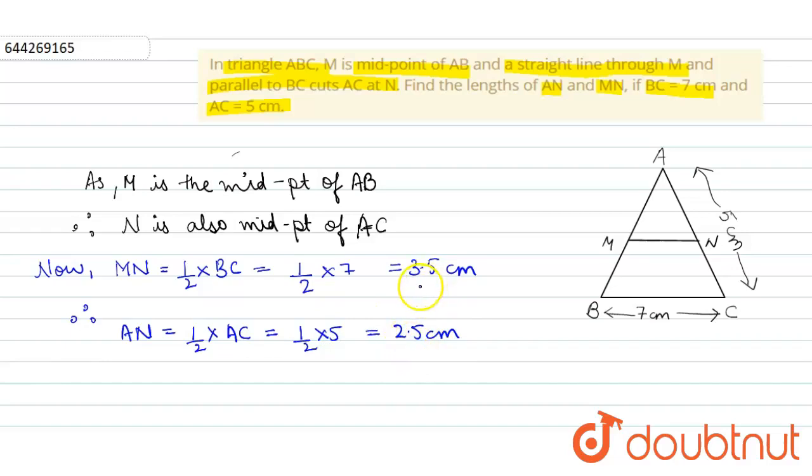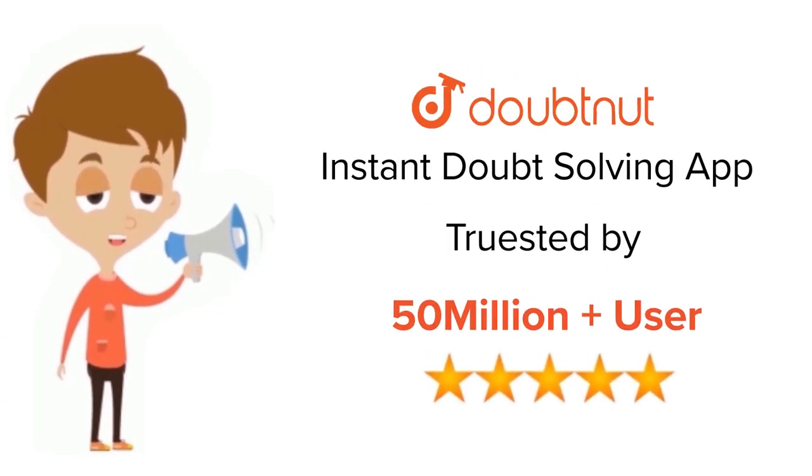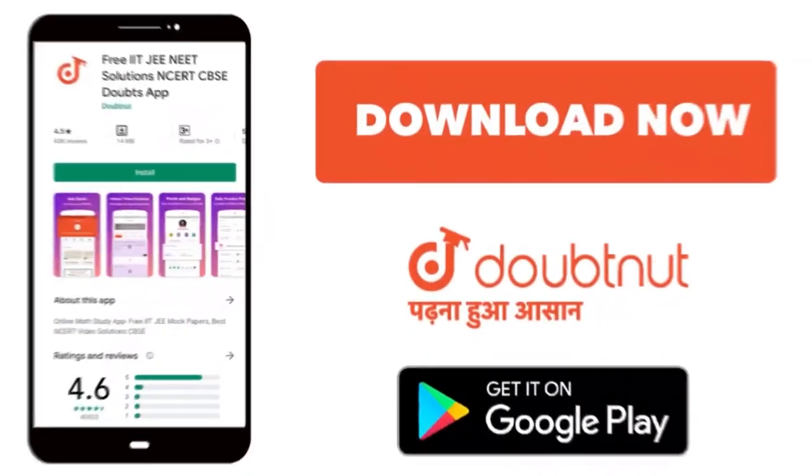We got our measurement of MN and AN. For class 6 to 12, IIT-JEE and NEET level, trusted by more than 5 crore students. Download Doubtnet app today.